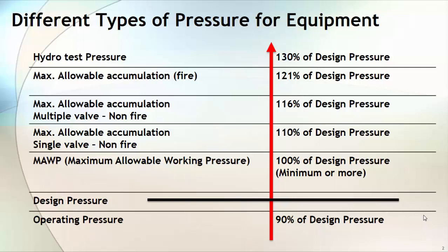So now we have covered three terms: operating pressure, design pressure, and maximum allowable working pressure. Operating pressure is based on your process condition. You will add some safety margin on that, which will become your design pressure. Based on this design pressure, your equipment manufacturer will design the equipment and come up with a number which is usually equal to or more than your design pressure — that will become your maximum allowable working pressure.